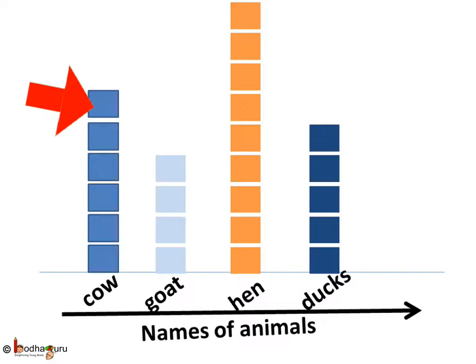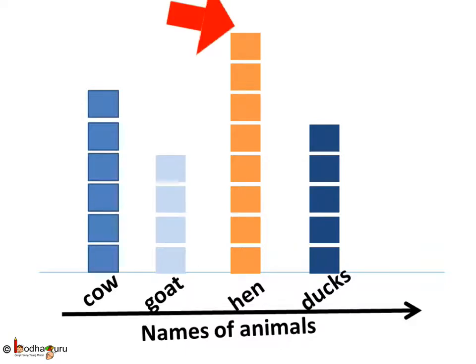But one hen was taken by a fox, so we reduce one box from the column for hens, as he now has one fewer hen.